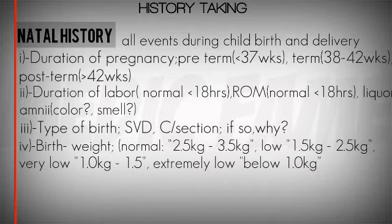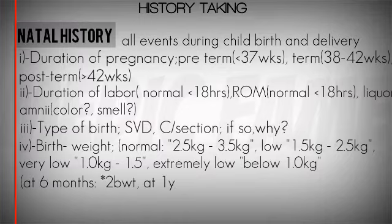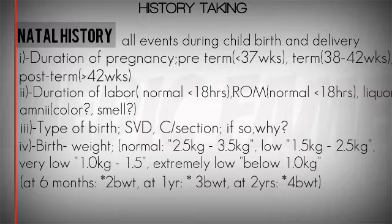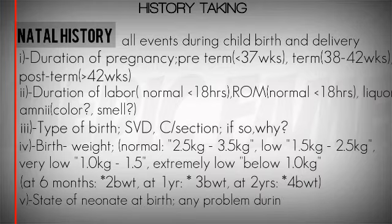We should also consider pediatric weight milestones: at six months the body weight should be twice the birth weight, at one year it should be three times the birth weight, and at two years the body weight should be four times the birth weight.